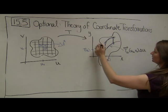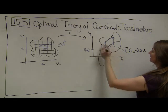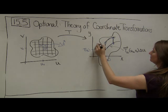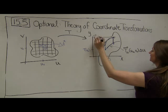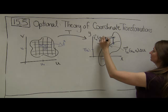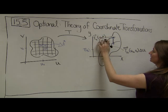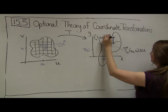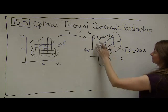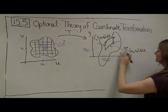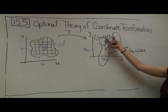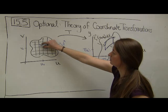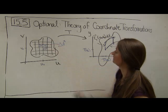Similarly, my direction vector in the V direction is going to be given by the partial derivative T_v at the point U-naught, V-naught, and the length of it is going to be given by delta V. These are our unit tangent vectors, and that's why I need to scale them up or down by the width of our dV's.